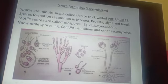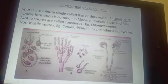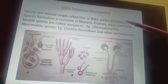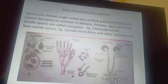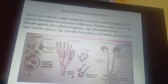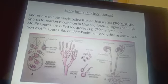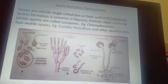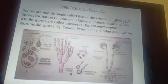Spores are single-celled, thin or thick walled structures. What are they called? Propagules — this is a new term for you. Spore formation is common in Monera, Protista, algae, and fungi. Here you will see that spore formation occurs in special structures.